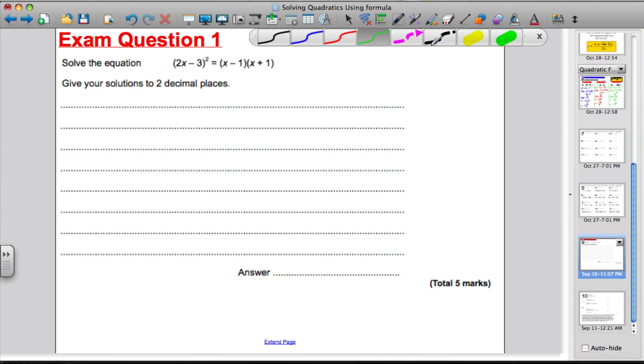Let's just read out the question and make sure we understand it. Solve the equation, this. Give your solutions, plural, to two decimal places. A couple of things to think about. Solutions mean there's more than one. There'll be two. Makes you think it's quadratic. When you look at the thing up here, when you multiply this out, you can imagine you're going to get x squared. So you're thinking quadratic.